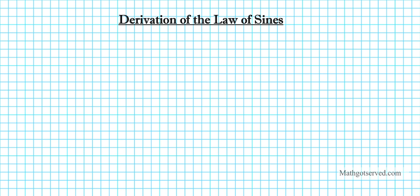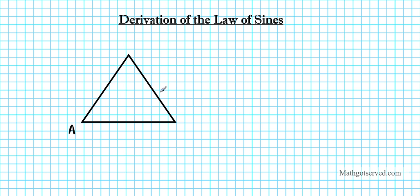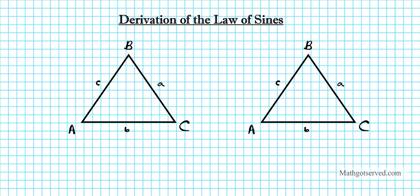Today students, in this clip we're going to be going over the derivation of the Law of Sines. Before we state the law, let's sketch two triangles that are identical. I'm going to label them using the following format: uppercase A and lowercase a, uppercase B and lowercase b, uppercase C and lowercase c.